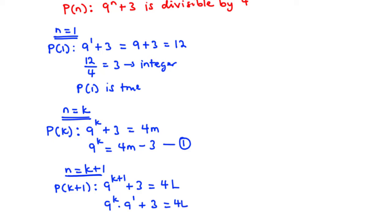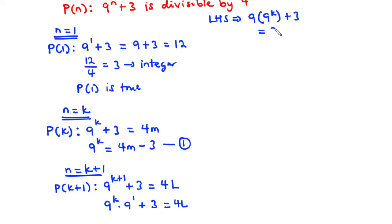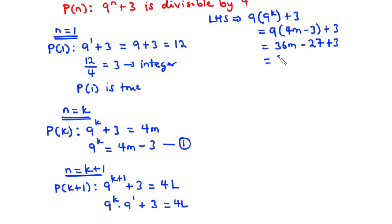Resolving the left-hand side: 9 times 9^k plus 3. From equation 1, 9^k equals 4m minus 3, so we substitute: 9 times (4m minus 3) plus 3. Multiplying 9 across gives 36m minus 27 plus 3, which simplifies to 36m minus 24.